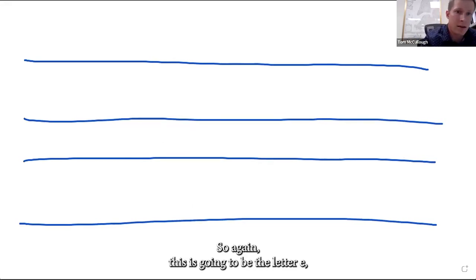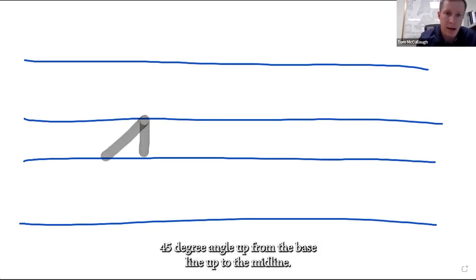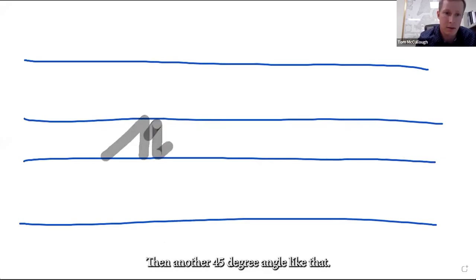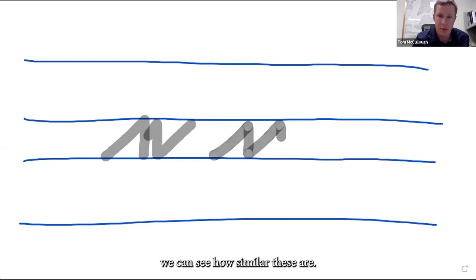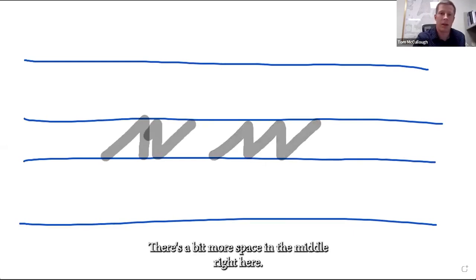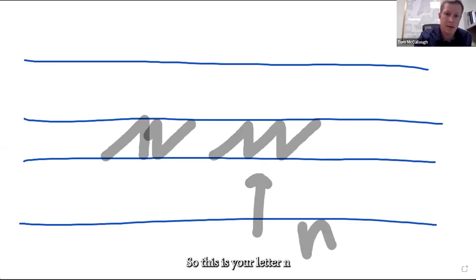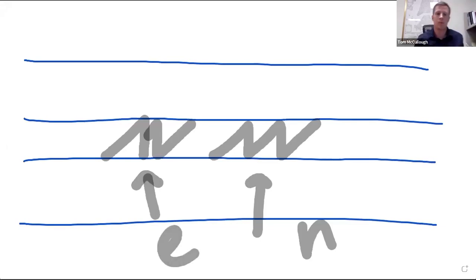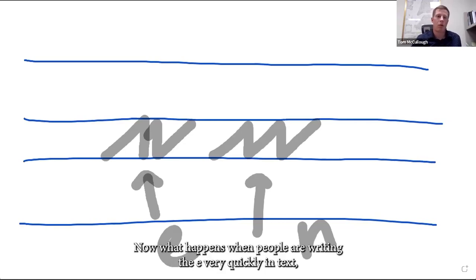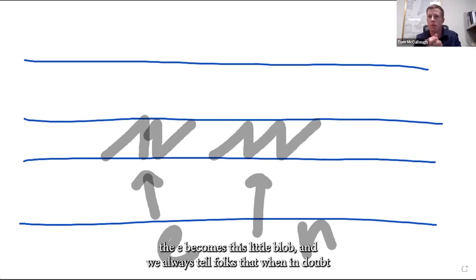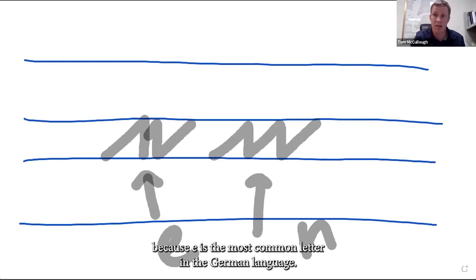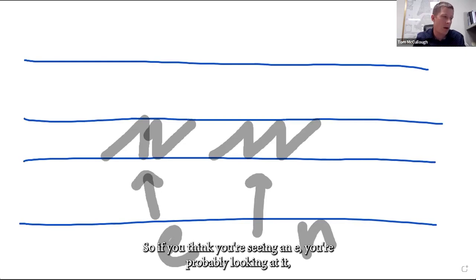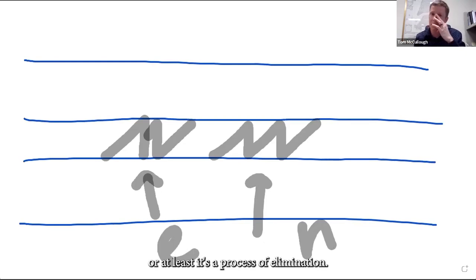Now I want to show the E and the N. The letter E is drawn at a 45-degree angle up from the baseline to the midline, then another 45-degree angle back down. The letter N is very similar but with a bit more space in the middle. When people write E very quickly in text, it becomes a little blob — and we always tell people that when in doubt, that little blob is an E, because E is the most common letter in the German language. So if you think you're seeing an E, it's probably a good guess.